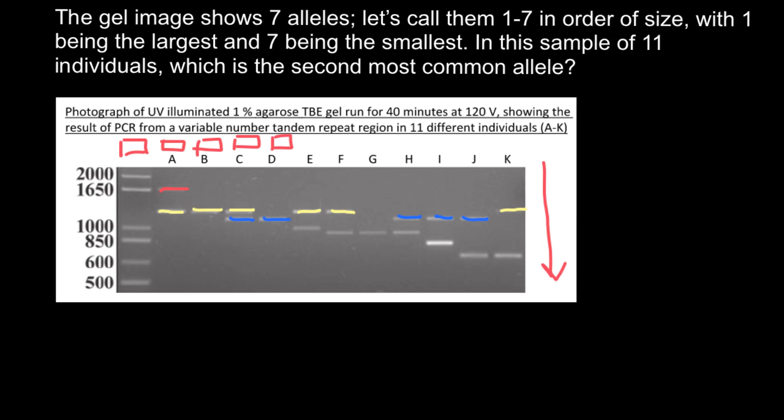And our question is which is the second most common allele. This allele is going to be number one. Yellow type of alleles going to be number two. And this, which is going to be the second most common allele, would be number three. And this is going to be our answer today.